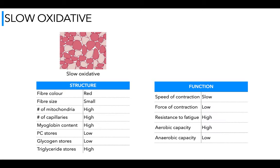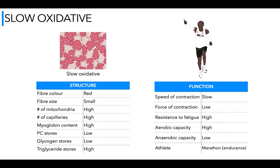An athlete example would be a marathon runner — endurance exercise, usually lower intensity, working aerobically using these slow oxidative fibers. We could go into genetics here: some people are genetically more suited to endurance fibers, having a higher number of slow oxidative fibers. On average, a person has a 50-50% split between slow and fast twitch. But some are genetically more suited to particular types of activities — for example, a marathon runner might have more slow twitch fibers in the gastrocnemius.